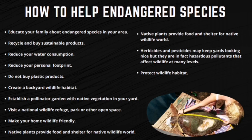Perhaps the greatest threat many species face is the widespread destruction of habitats. Scientists tell us the best way to protect endangered species is to protect the special places where they live — wildlife must have places to find food, shelter, and raise their young. Logging, oil and gas drilling, overgrazing, and development all result in habitat destruction. By protecting habitats, entire communities of animals and plants — and also ourselves — can be protected together.